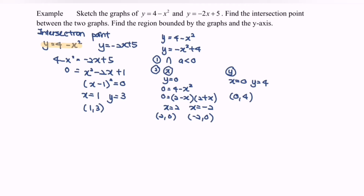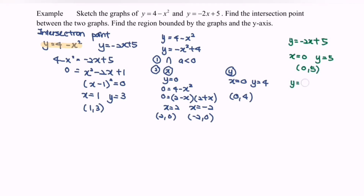Next, we sketch the graph for y equals negative 2x plus 5. When x equals 0, the value of y equals 5, so the coordinate is (0, 5). When y equals 0, the value of x equals 5 over 2, meaning the x-intercept is (5/2, 0).